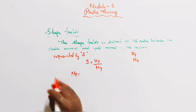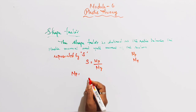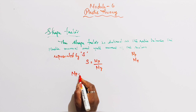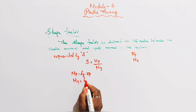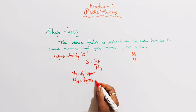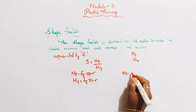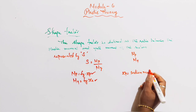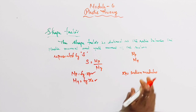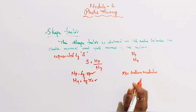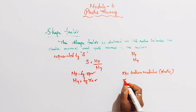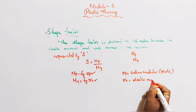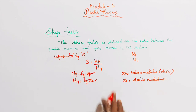We know from bending theory that M by I equals F by Y. Here, ZP is called the plastic section modulus and ZE is called the elastic modulus.